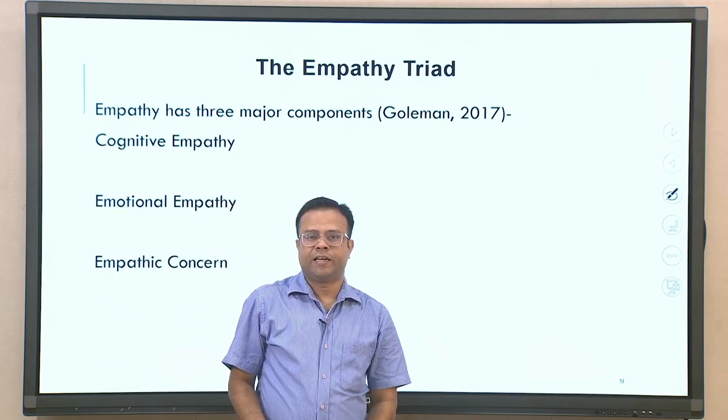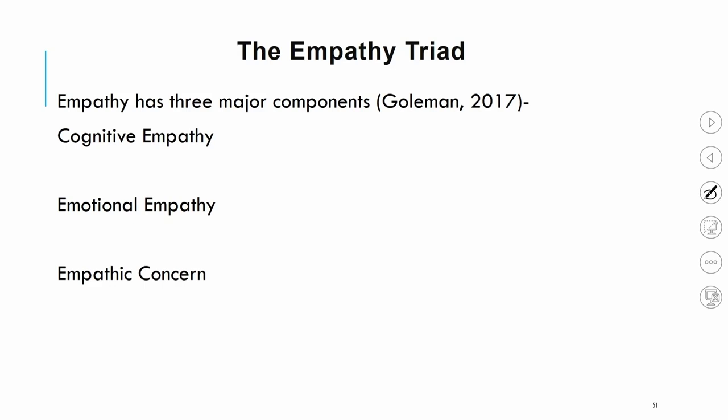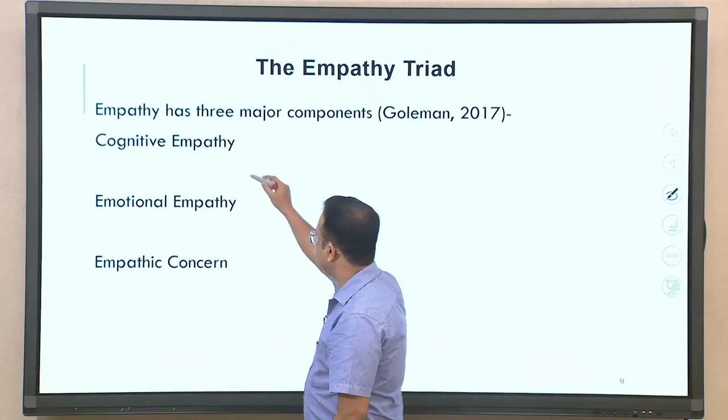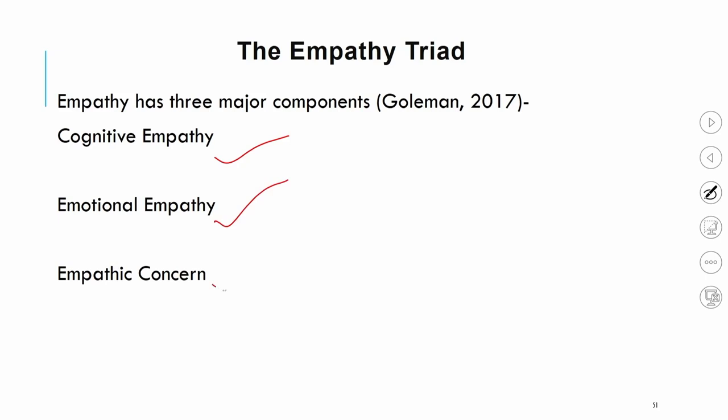Goleman in his model talks about empathy in detail and broadly defines it. He said empathy has three important components: one is cognitive empathy, another is emotional empathy, and the third is empathic concern. Let us see what these three dimensions of empathy are.